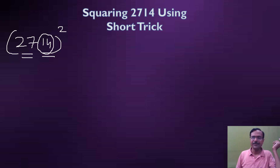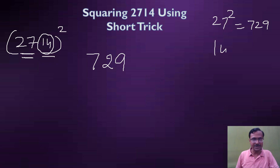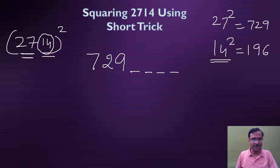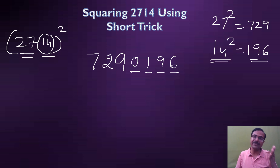Since 14 is a two-digit number, I want four digits for its square in this position. 27² = 729, so I write 729. 14² = 196, but since I always want four digits here, I write it as 0196. If the square has fewer digits, you must prefix zeros — that is the first important point.